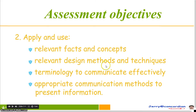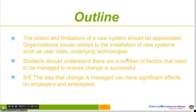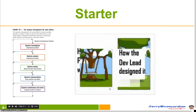The objectives cover relevant facts, concepts, design methods, techniques, and terminologies to communicate effectively. The topic relates to higher-level Topic 7: control, centralized control systems, and distributed systems. The extent and limitations of a new system should be appreciated, along with organizational issues related to installation of new systems such as user roles and underlying technologies. Students should understand the factors that need to be managed to ensure change is successful, and the social and ethical issues about how change is managed can have significant effects on employers and employees.